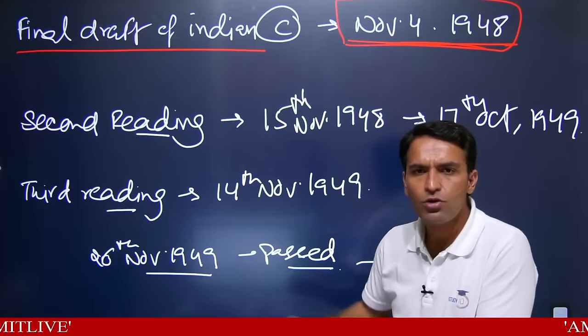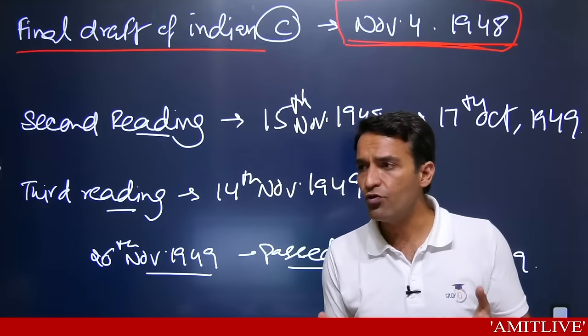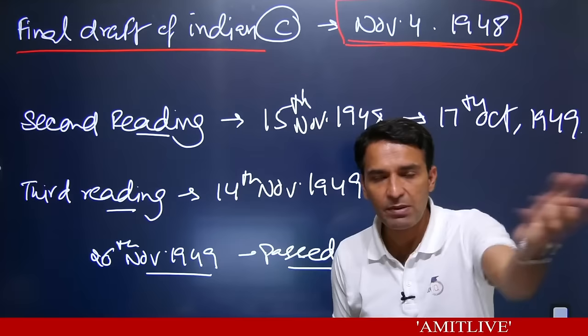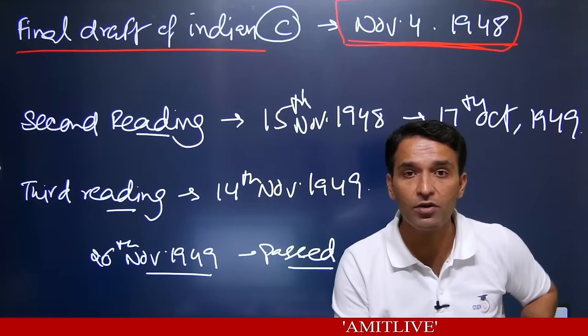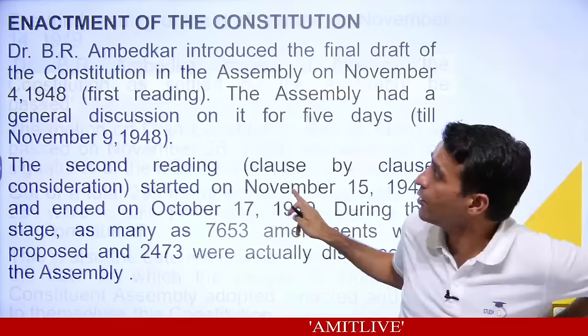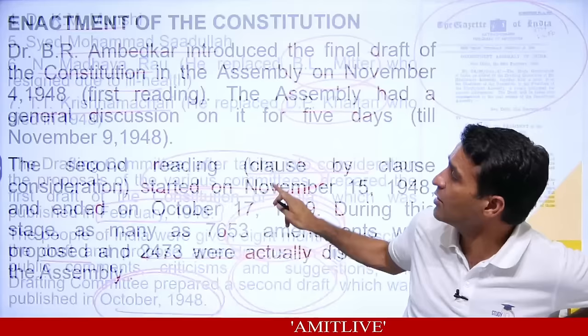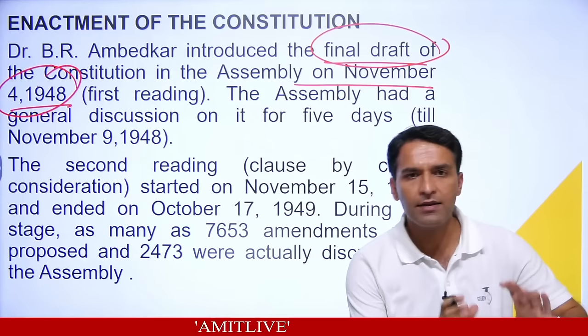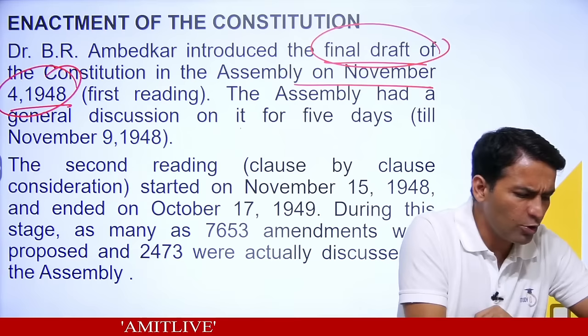On 26th November 1949, the constitution was passed and received the signatures of the members and the president. Out of 299 members, 284 were physically present that day. Some had passed away between 1946 and 1949 as there were many old people in the Constituent Assembly. This date — 26th November 1949 — is also mentioned in the preamble as the date on which the people of India adopted, enacted, and gave themselves the constitution.